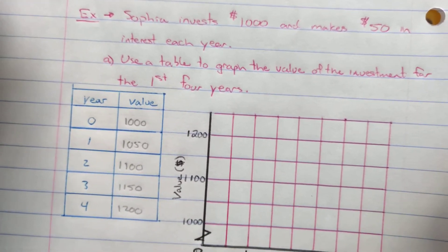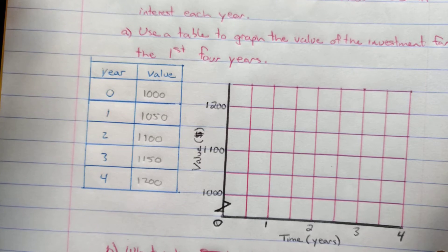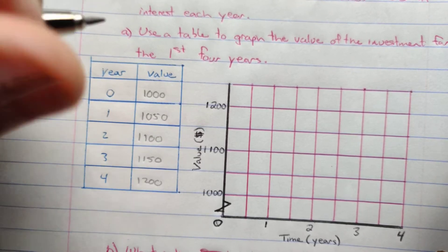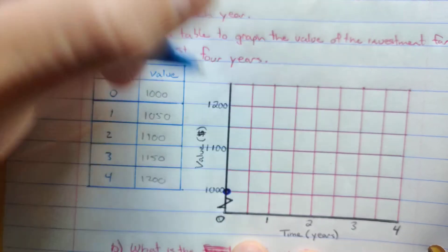So again, I have a broken graph here. That's the little Z cut through the graph. And then I'll graph all these points. So we got zero and 1,000. One and 1,050. Two and 1,100.